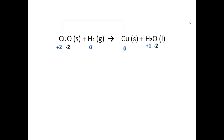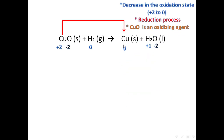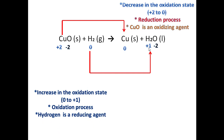Now let's study the changes of oxidation states for the atoms. Here we have copper: in copper oxide it was positive two, and then it turned to zero. We have a decrease in the oxidation state from positive two to zero, so we have a reduction process here, and we consider the whole compound copper oxide as the oxidizing agent. What about hydrogen? It was zero oxidation state, and then it turned to positive one. An increase in oxidation state is considered an oxidation process, so hydrogen here is considered the reducing agent.